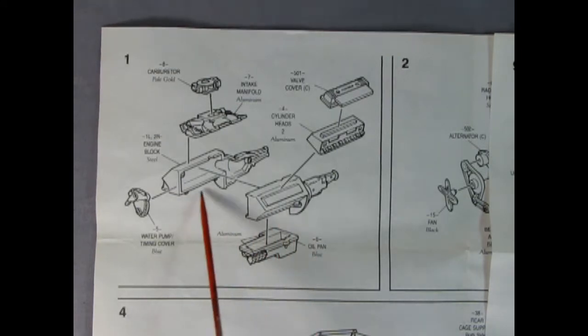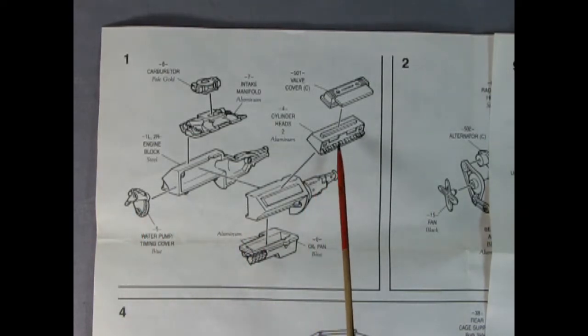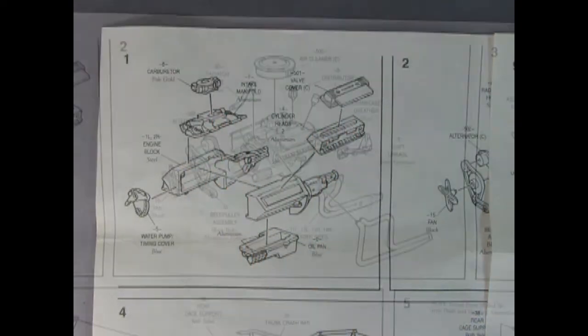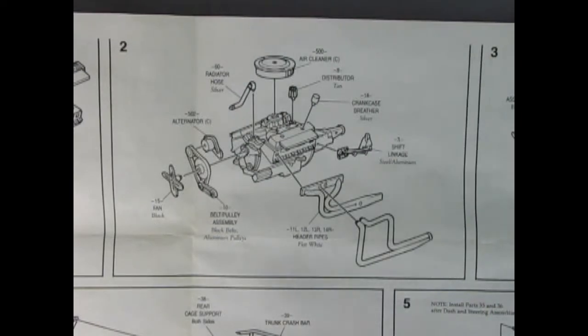So there we've got our right and left hand side engine block with the oil pan being glued up from underneath. There's our water pump and our cylinder heads for both left and right hand side. We've got a chrome valve cover, intake manifold, and our carburetor. We complete this really amazing looking engine in panel 2 by dropping our air cleaner on the carburetor, putting in our distributor, our crankcase breathers, shift linkage, then we've got our two-piece headers for both sides, our alternator and our belt and pulley assembly and our fan and an upper radiator hose as well.